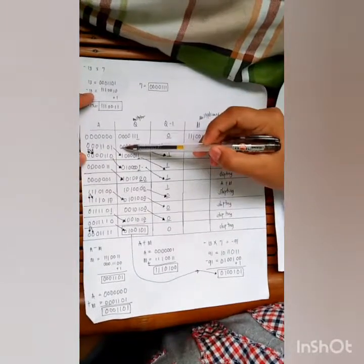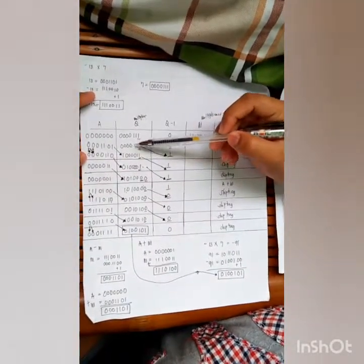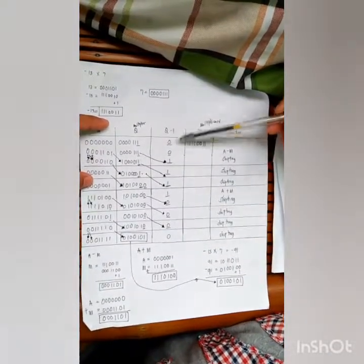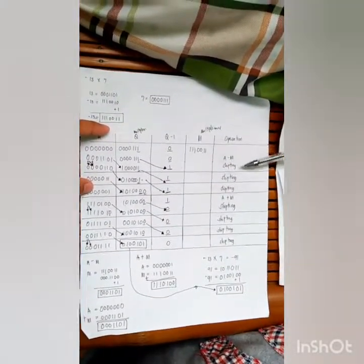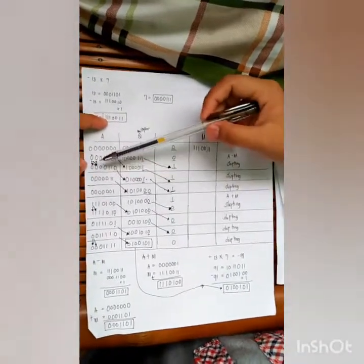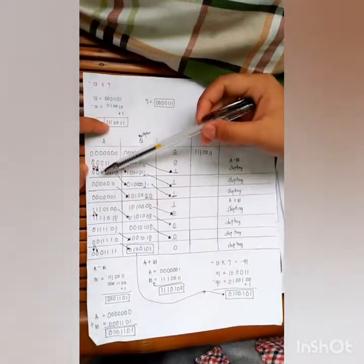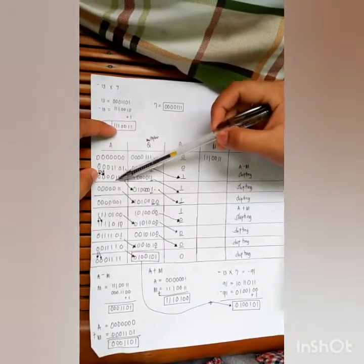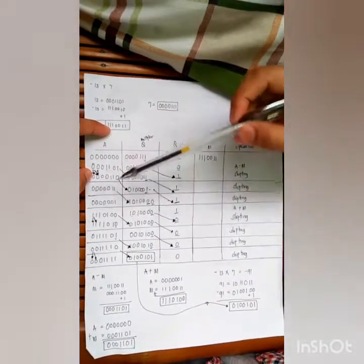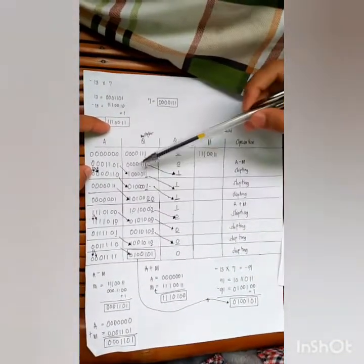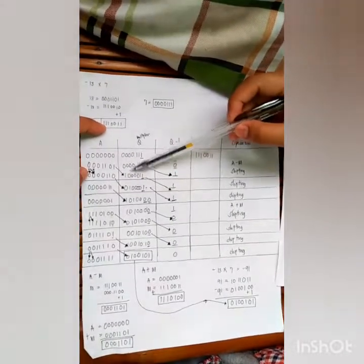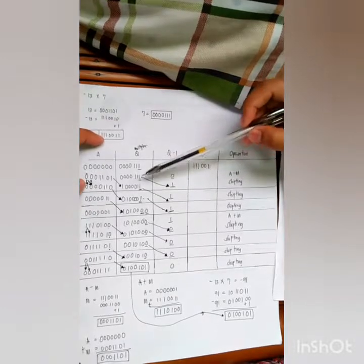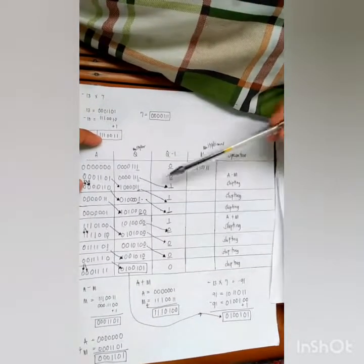Copy the multiplier which is 0000111. Then copy the Q minus 1, and the operation is A minus M. For now, we will double the first digit which is 0, then copy 00110. Then the last digit, copy to the multiplier, and also copy 000011. Then the last digit is 1, copy to the Q minus 1.